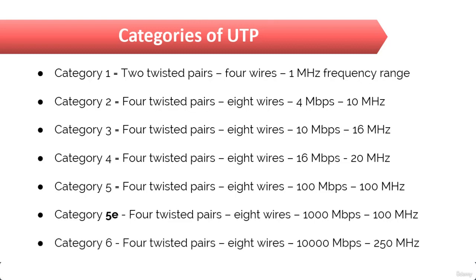Next comes Category 6. Category 6 has four twisted pairs, which means eight wires, and is used for 1000BASE-TX, rated for 250 MHz.